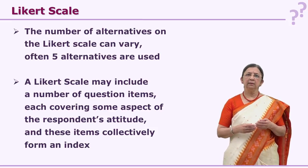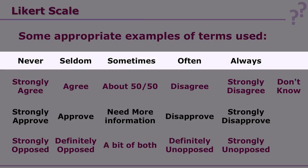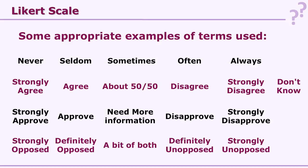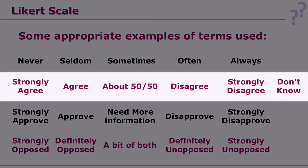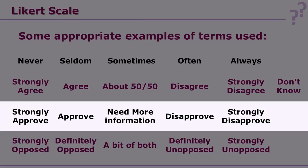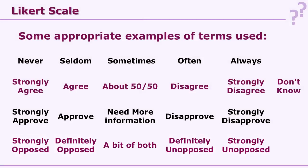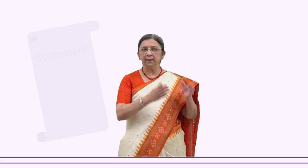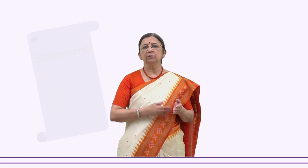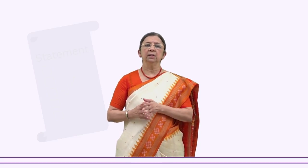The categories on Likert scale can include: never, seldom, sometimes, often, always — a 5-point scale from never to always. Another range is strongly agree, agree, about 50-50 (not sure), disagree, strongly disagree. Other variations include strongly approve to strongly disapprove, or strongly opposed to strongly unopposed, with 5 points in between. When we prepare statements related to attitude towards any event, concept, or phrase, those statements give a cumulative score based on these categories.